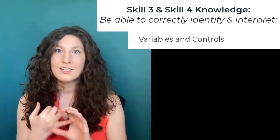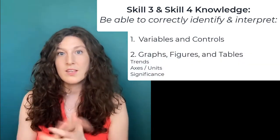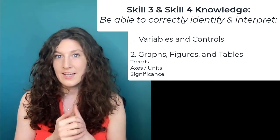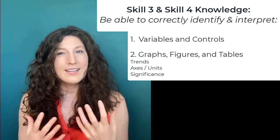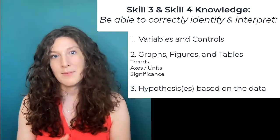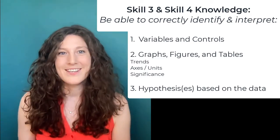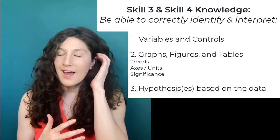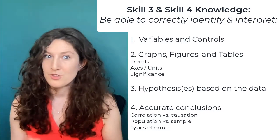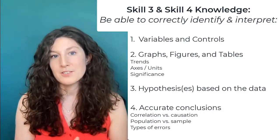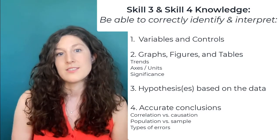You need to be able to correctly interpret various graphs, figures, and tables using trends within those figures, axes, units, and statistical significance. Then you need to be able to correctly identify the hypothesis or hypotheses that the passage is referencing and whether or not the data actually supports that hypothesis. Finally, you've got to be able to differentiate between accurate conclusions we can make about the data versus out-of-scope conclusions, using terms such as correlation versus causation, populations and samples, and random versus systematic errors.